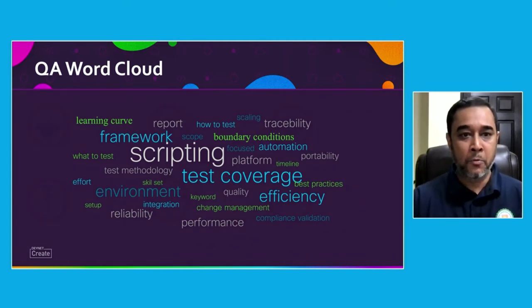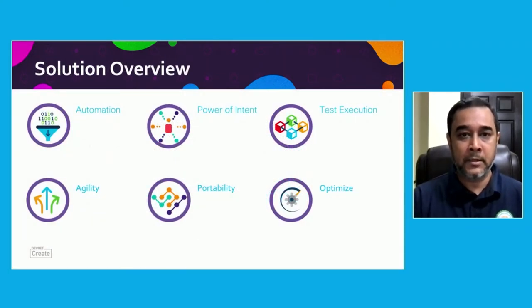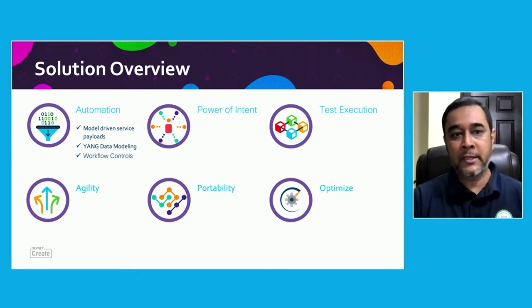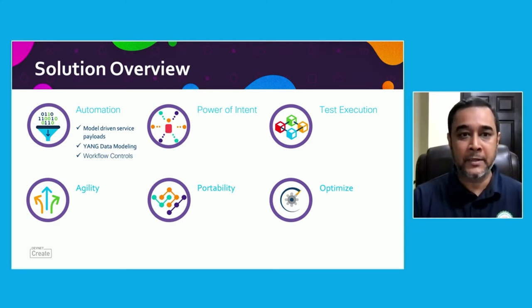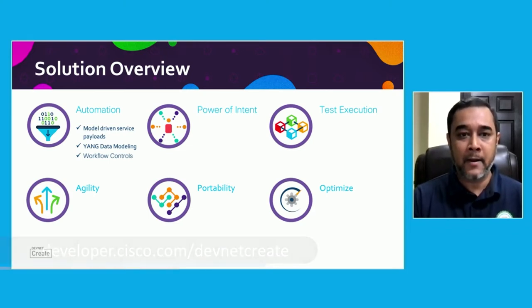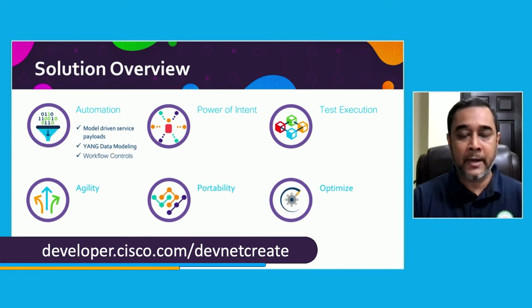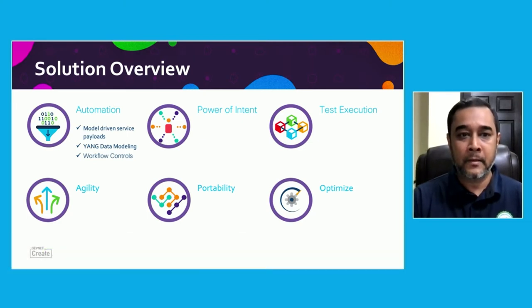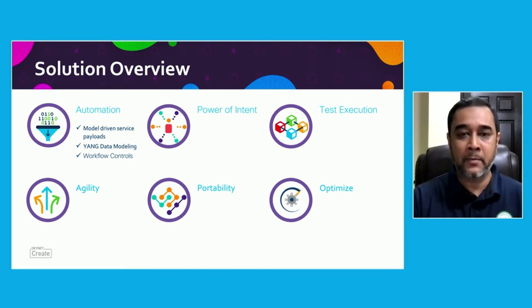The solution Ubot comes with multiple features in respect of test automation. First, let's talk about model-driven service payload generation. For any system adhering to a YANG model, Ubot has the capability to dig into that environment, get the entire schema of that model, and automatically generate and build the payloads required to test that particular platform. This was previously done manually, but with Ubot you can simply point it to the platform and get that automatically generated.